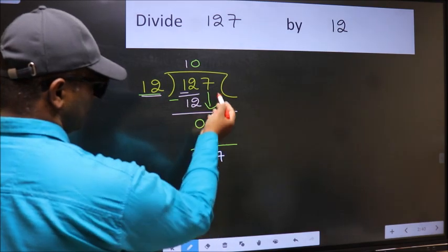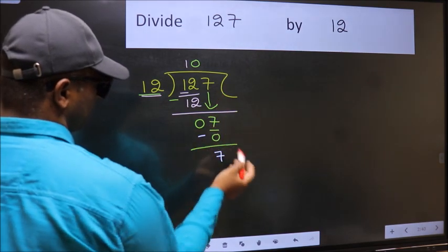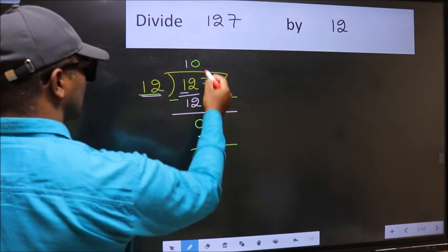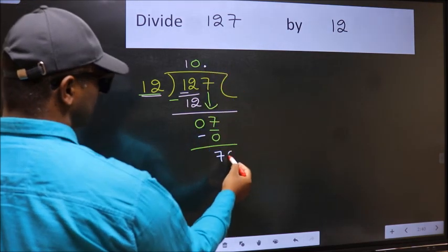Over here, we did not bring any number down. And 7 is smaller than 12. So now you can put dot and take 0.